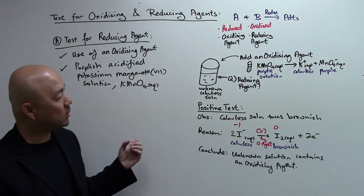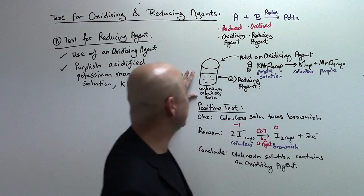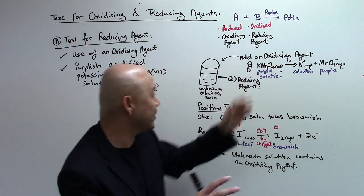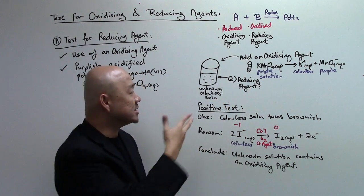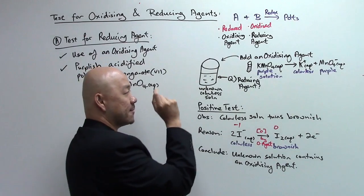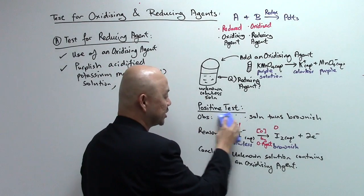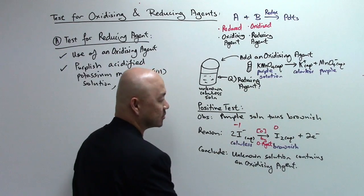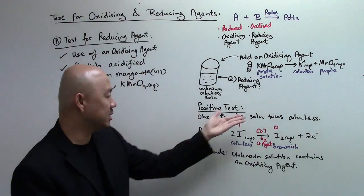If there is a reducing agent in the unknown solution, a redox reaction will occur. When you add purple KMnO₄ into the unknown colorless solution, you initially get a purple mixture. If there is truly a reducing agent present, the observation is that the purple solution turns colorless — it decolorizes.